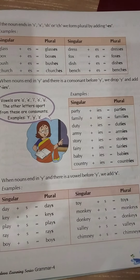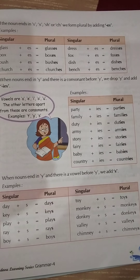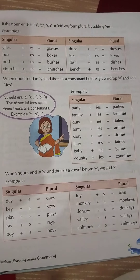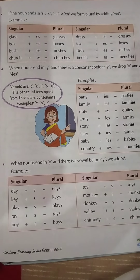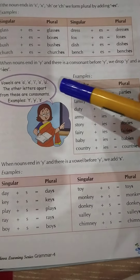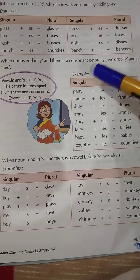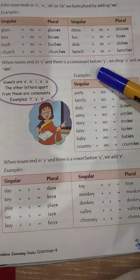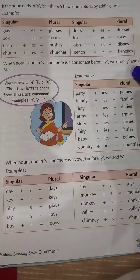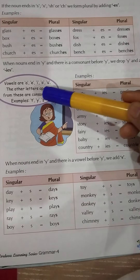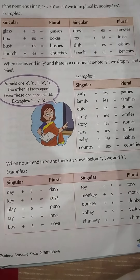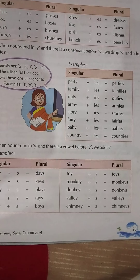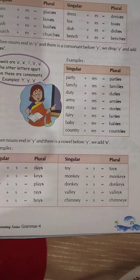When nouns end in Y and there is a consonant before Y, we drop Y and add IES. Vowels are A, E, I, O, U — I know you all know what vowels are. If there is a consonant before Y, we drop Y and add IES to make the plural form.